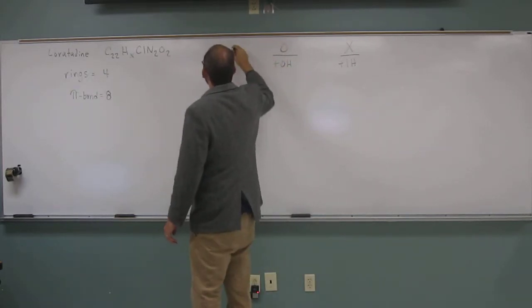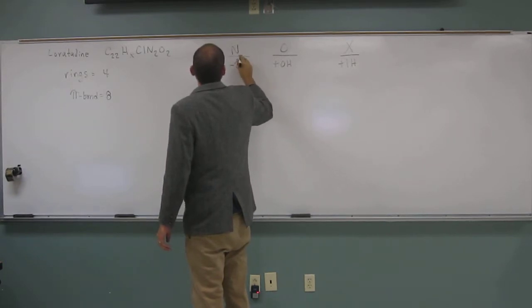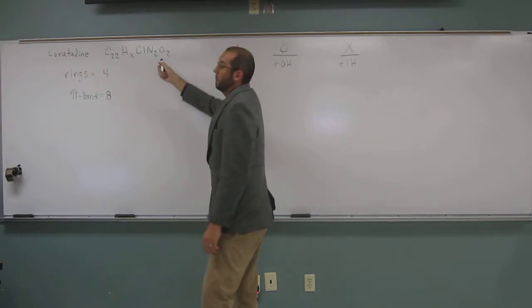And then we also have a nitrogen in here. What do we do there? Subtract. So we've got to subtract one hydrogen for each nitrogen. So in this case we're going to subtract two.